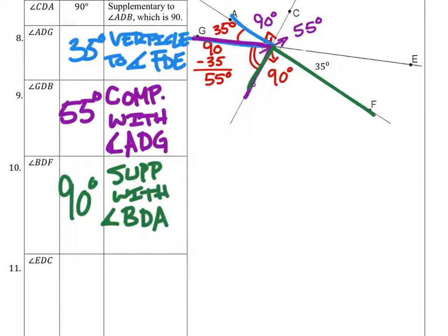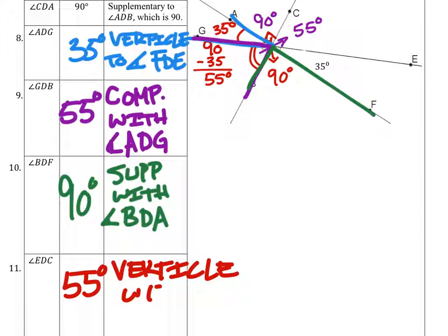All right, angle EDC is 55 degrees as well. And that is because it was vertical with angle BDG.